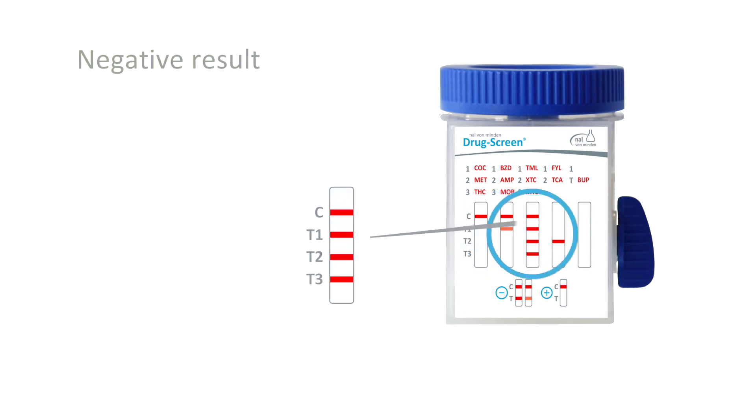A line in the test line region indicates a negative result. Again, a control line signifies that the test has performed correctly and should always be present.